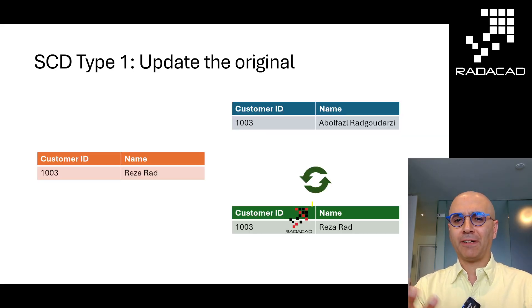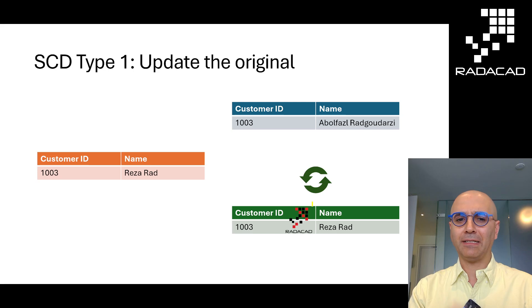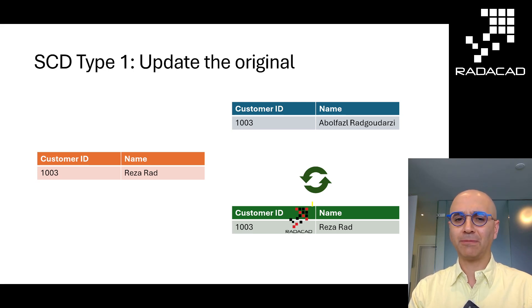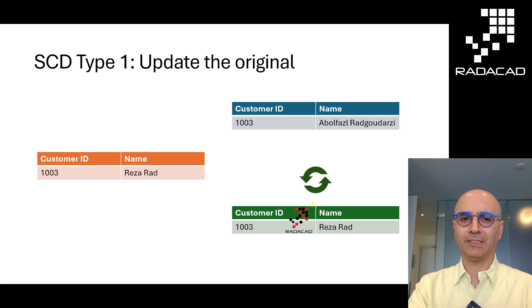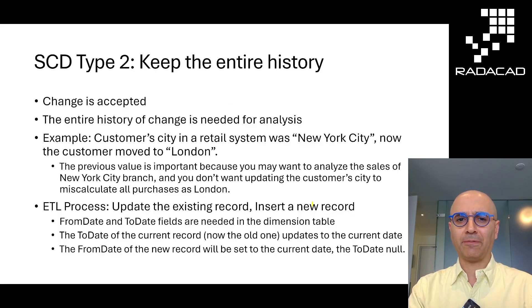So in this case, if I have a table with customer ID and customer name and then the name changes, the updated value would be the same customer ID but with a different name. This is SCD Type 1.